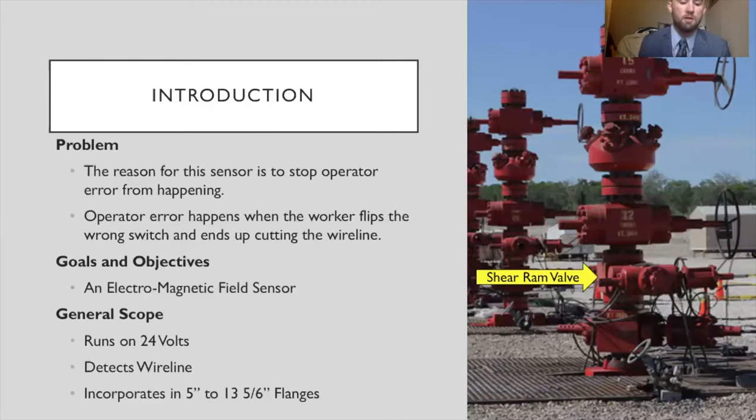As a general scope, our sensor will run off 24 volts, it detects wireline, and it's able to be incorporated into 5-inch to 13 5/16-inch flanges.